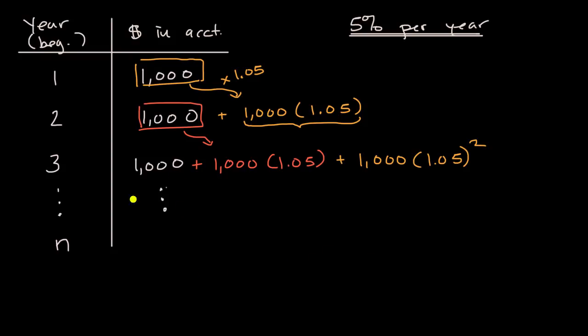Well, for year n, you're going to make that original $1,000 at the beginning of year n, and then you're going to have $1,000 times 1.05 for that $1,000 that you deposited at the beginning of year n minus one.